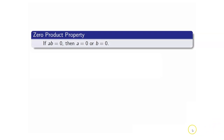Let us recall the zero product property. The zero product property states that if the product of two numbers is equal to zero, then at least one of them must be equal to zero. Hence, if you have a product of two numbers equal to zero, you can equate the factors to zero. However, you cannot do that if the number on the right-hand side is not equal to zero.